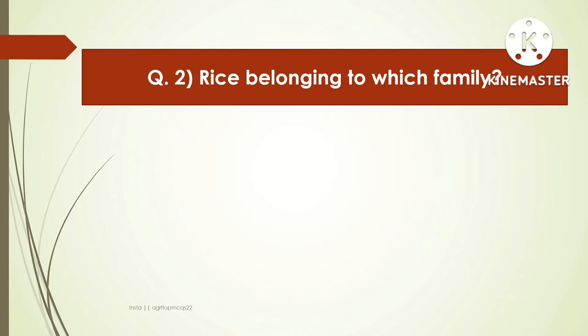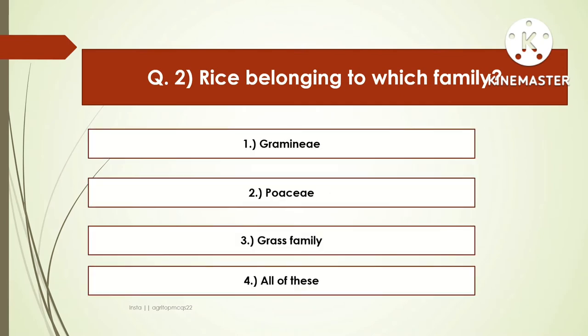The next question is: rice belongs to which family? Options are Gramineae, Poaceae, Grass family, or all of these. The right answer is all of these. Rice belongs to Gramineae, and Poaceae is a sub-family of Gramineae. All grasses are included in Gramineae, so Gramineae is also known as the Grass family.